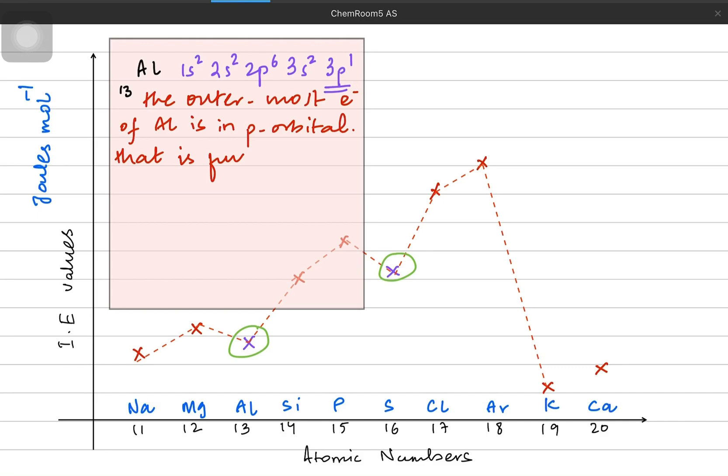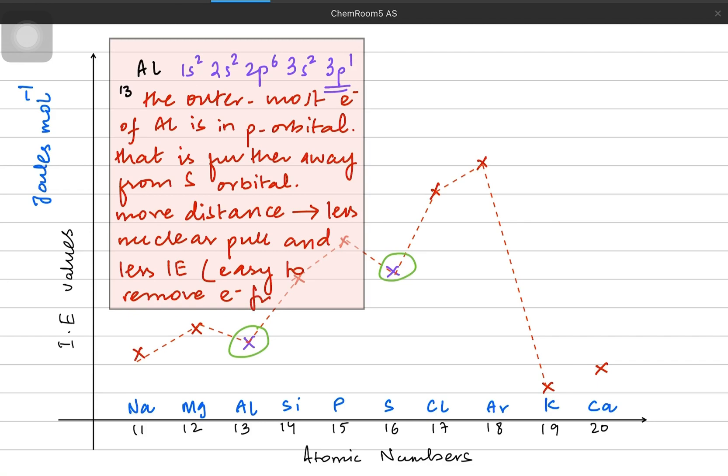And remember that p orbitals come after the s orbital. So that is, the p orbital is further away from the s orbital, which means the p orbital is more distant from the nucleus. More distant means less nuclear pull. So more distant gives us lesser nuclear pull applied on the electron present in the p orbital, and less ionization energy. Which means it's easier to remove the electron from the aluminum's p orbital.